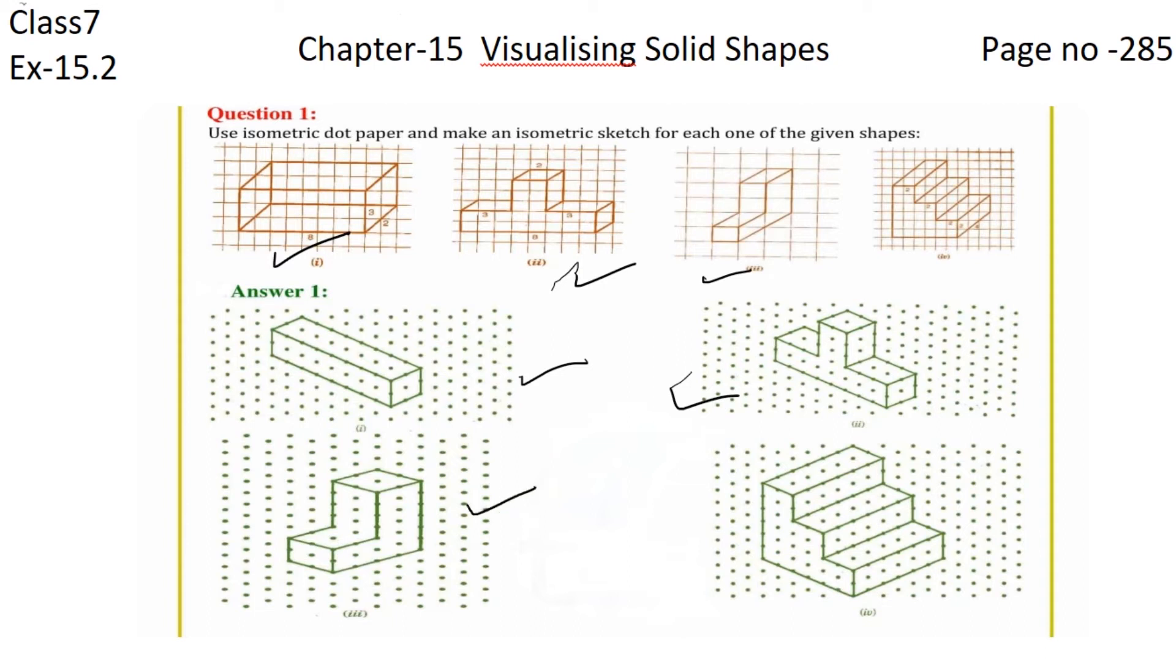Now comes to the fourth one. This is the fourth sketch we are having, and this is the isometric sketch of the given figure. With this one, we have completed question number one. In the next video, we are going to start with question number two.